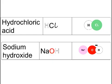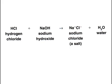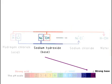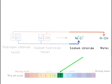Remember that hydrochloric acid's formula is HCl and sodium hydroxide's formula is NaOH. Hydrochloric acid reacts with sodium hydroxide to form sodium chloride solution and water. Here we start with an acid that reacts with a base to form a salt and water.